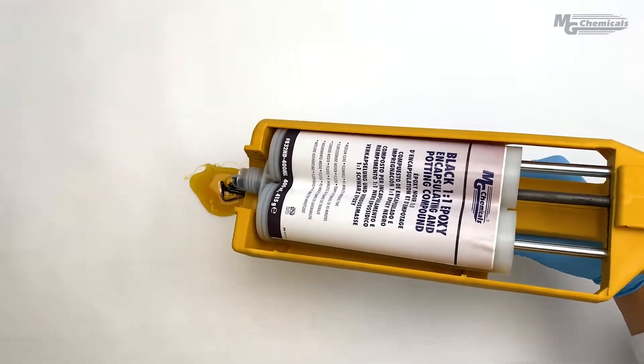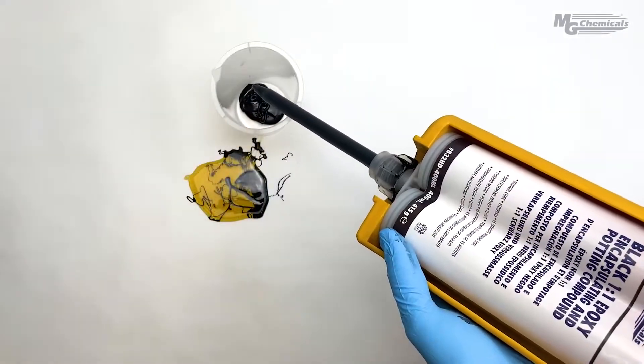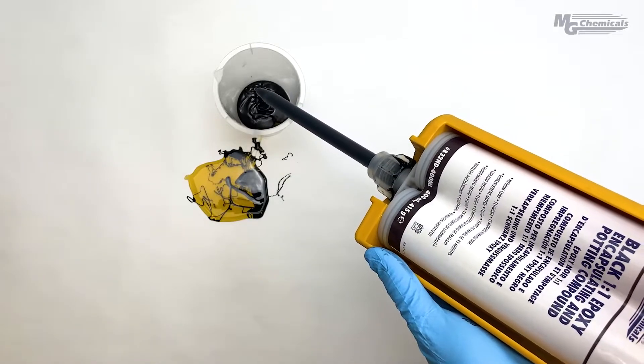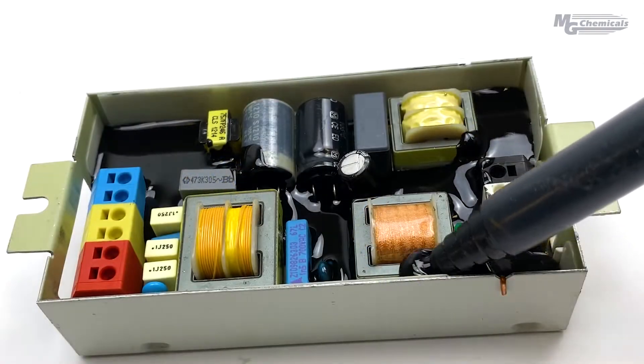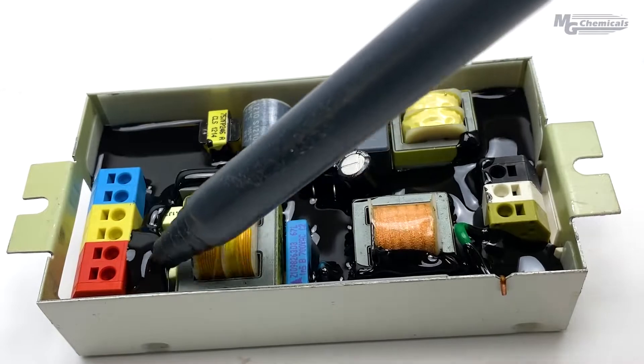Like with the 50 ml size, bleed some material first to prime both components ensuring you get the correct mix ratio. You can now quickly and easily pot units with the dispenser.